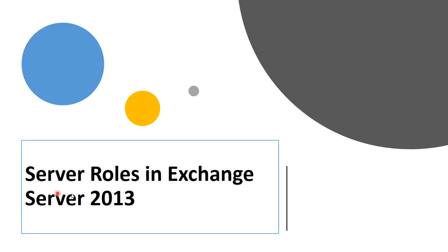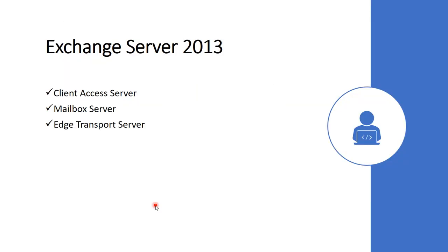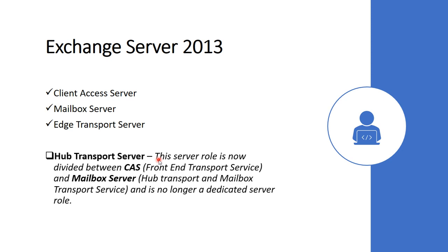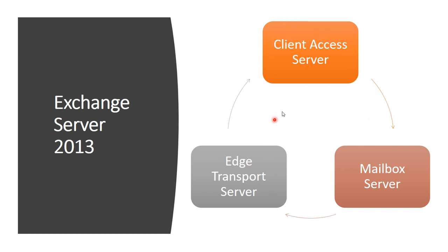In this video we're going to see server roles in Exchange Server 2013. Exchange 2013 has three server roles that can be installed: Client Access Server role, Mailbox Server role, and Edge Transport Server role. The Hub Transport Server, which was present in the previous version of Exchange Server, is now divided between the Client Access Server and Mailbox Server role.